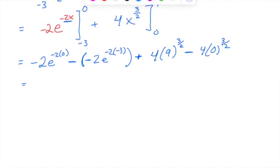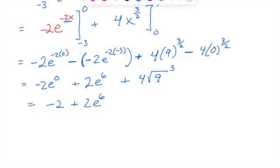This is negative 2e^0, and e^0 equals 1, so we get negative 2. This will be minus, and minus negative will be plus 2e^6 when you multiply those exponents. Here we'll be doing 4 times 9^(3/2), which is the square root of 9 cubed. The square root of 9 is 3, 3 cubed is 27, so 4 times 27 will give you 108.